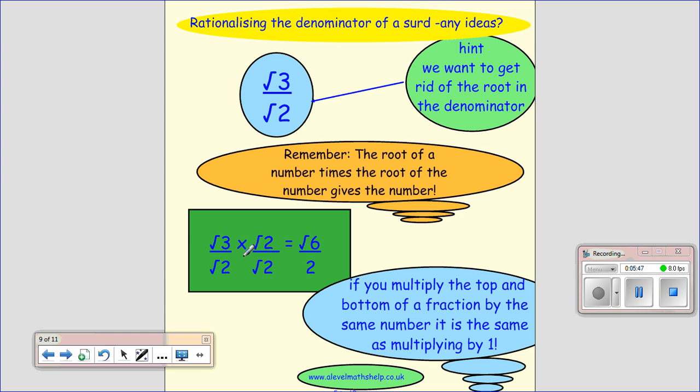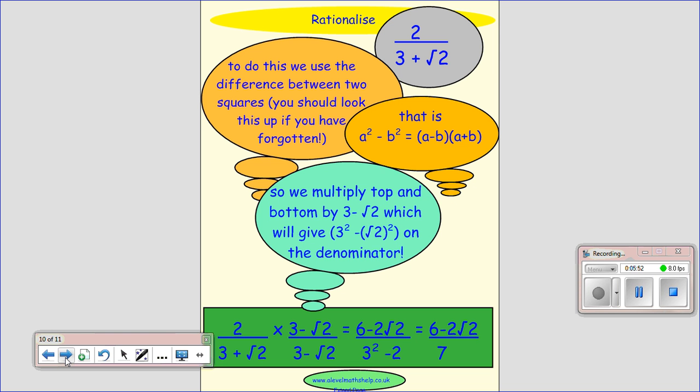So it's root 6 over 2. Don't forget, if you multiply the bottom to get rid of the surd, you must multiply the top by the same thing.